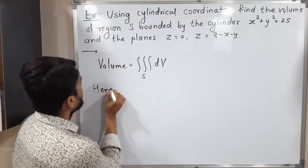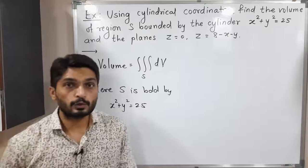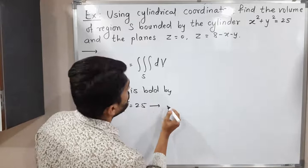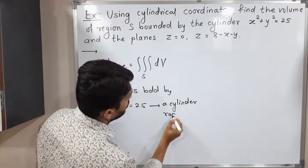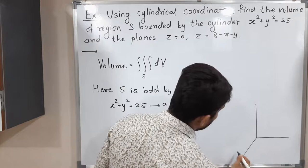Region S is bounded by x² + y² = 25. We know this is the equation of a circle in the xy-plane with center (0,0) and radius 5. But when we talk about R3, it is a cylinder with radius 5, since 25 is the square of 5. Let me show a rough sketch — here is the x-axis, y-axis, and z-axis.